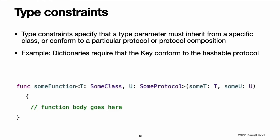Type constraints. The swapTwoValues function and the stack type can work with any type. However, it is sometimes useful to enforce certain type constraints on the types that can be used with generic functions and generic types. Type constraints specify that a type parameter must inherit from a specific class or conform to a particular protocol or protocol composition. For example, Swift's dictionary type places a limitation on the types that can be used as keys. The type of a dictionary's keys must be hashable — that is, it must provide a way to make itself uniquely representable. Dictionary needs its keys to be hashable so that it can check whether it already contains a value for a particular key. Without this requirement, dictionary could not tell whether it should insert or replace a value for a particular key, nor would it be able to find a value for a given key that is already in the dictionary.